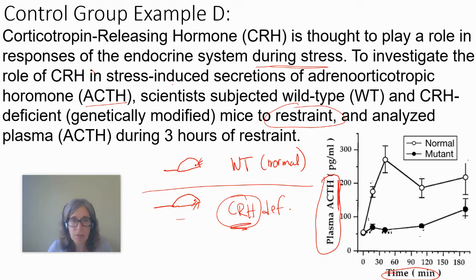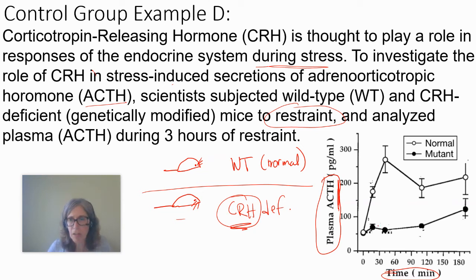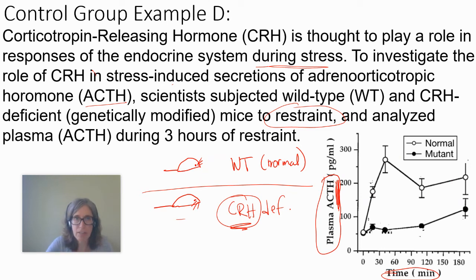Time is the independent variable. Plasma ACTH — that hormone — is the dependent variable. Looking at the data, the mutant mice don't make very much ACTH, while the normal mice do make a lot of ACTH.